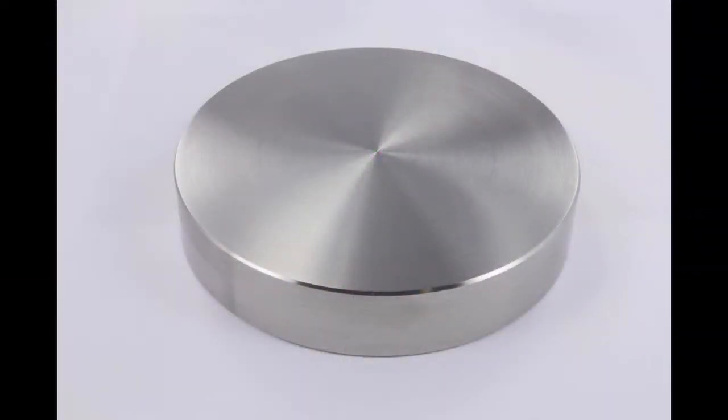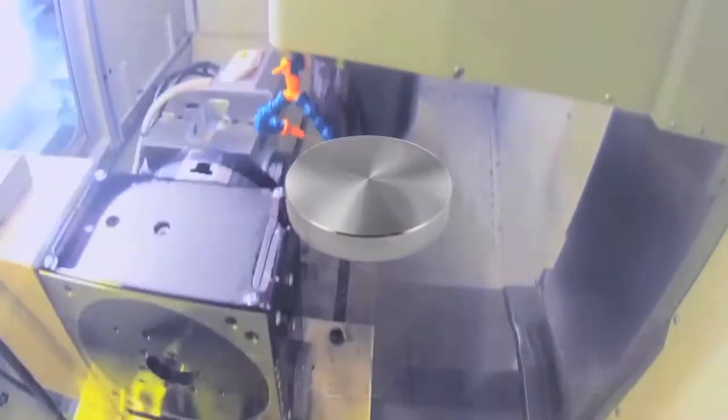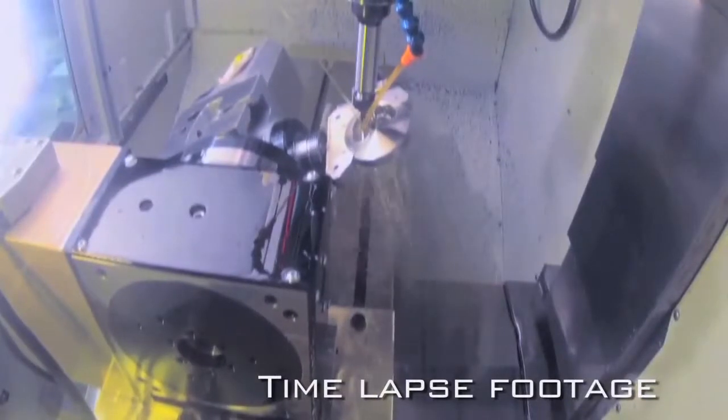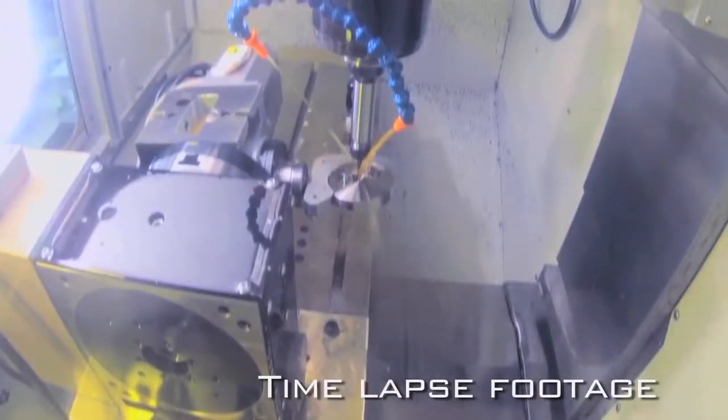A physical titanium blank is then attached to a milling fixture and placed within the highly precise 5-axis mill. Actual milling time varies, but generally requires just a few hours.